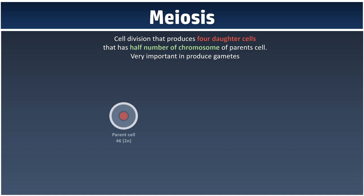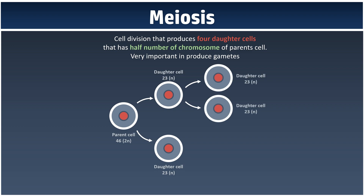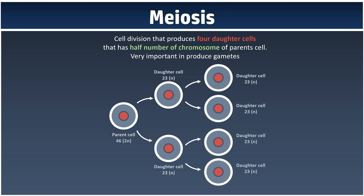For example, we have a parent cell that consists of 46 chromosomes. In meiosis, cell division occurs two times. In the first round, it will divide into 2 daughter cells. And each of the daughter cells will undergo the second type of division to produce another 2 daughter cells. So all together, we have 4 daughter cells.